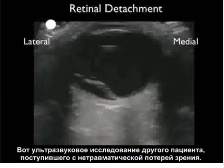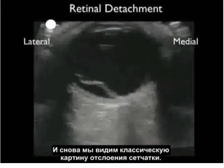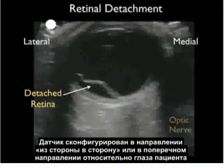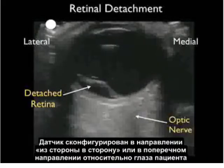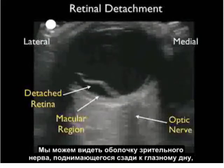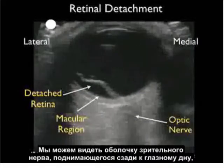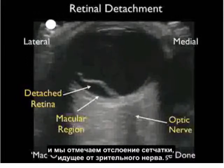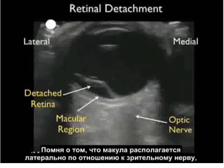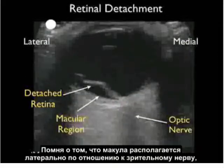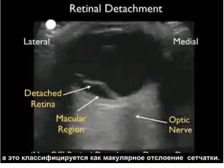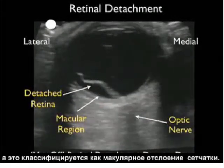Here's the ultrasound from another patient who presented with non-traumatic loss of vision, again showing the classic appearance of a retinal detachment. The probe is in a transverse orientation with the probe marker oriented lateral. We can see the optic nerve sheath coming up from the posterior aspect into the eye, with the detached retina emanating off from the optic nerve. Recalling that the macula lies just lateral to the optic nerve, we can see this detachment has affected the macula — classified as a mac-off or macular-off retinal detachment.